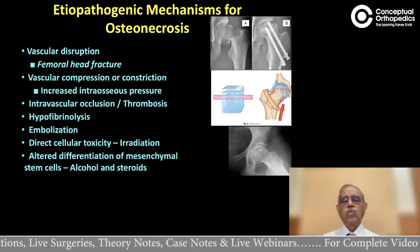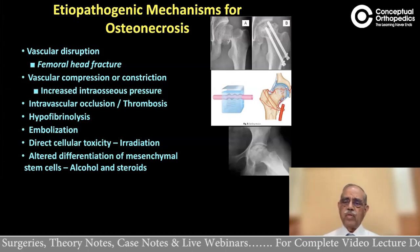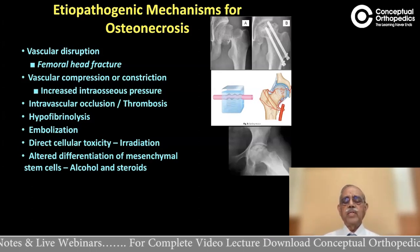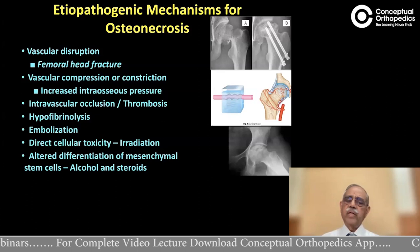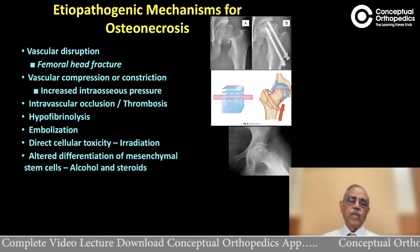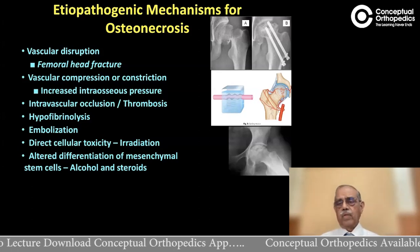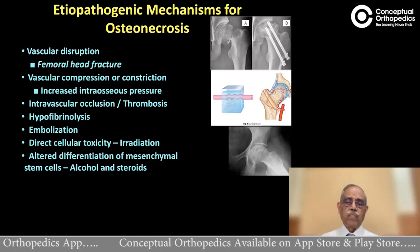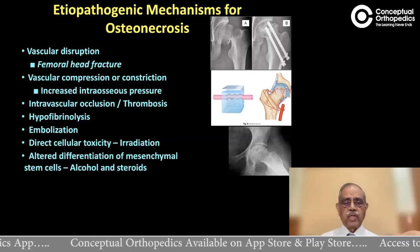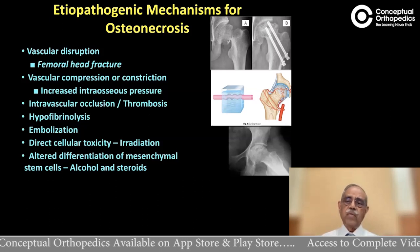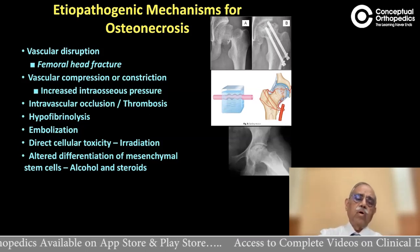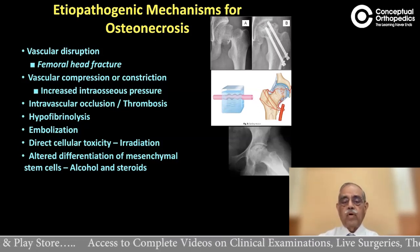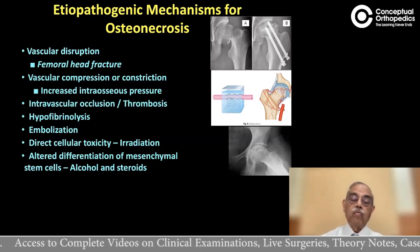The third cause is intravascular occlusion by thrombosis of the main vessel supplying the head and neck of the femur. This can be due to hypofibrinolysis, embolization of the vessel, or direct cellular toxicity as in irradiation around the hip for various cancers. It can also be due to altered differentiation of mesenchymal stem cells, as seen with overdose of alcohol and steroids, which is very well known today.